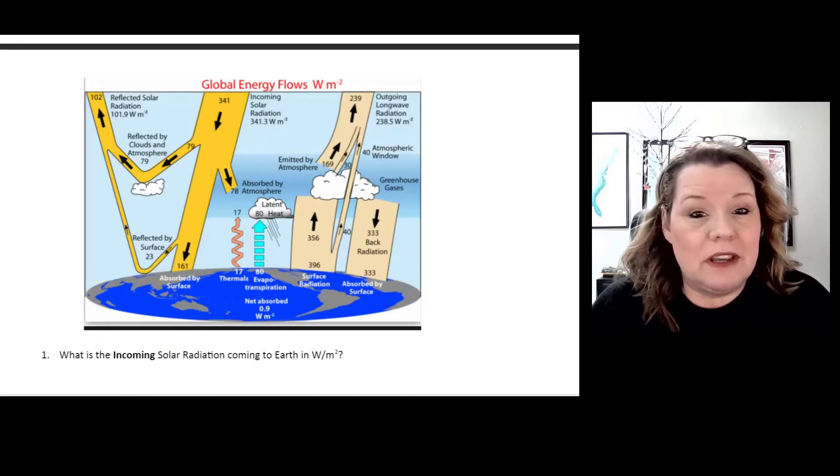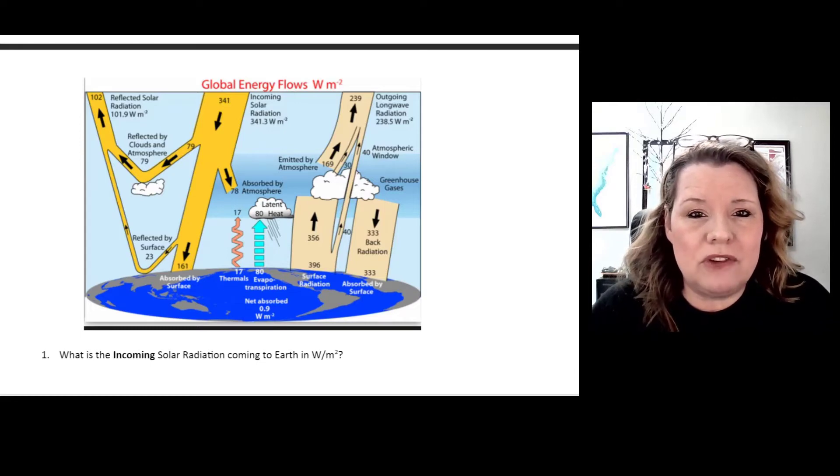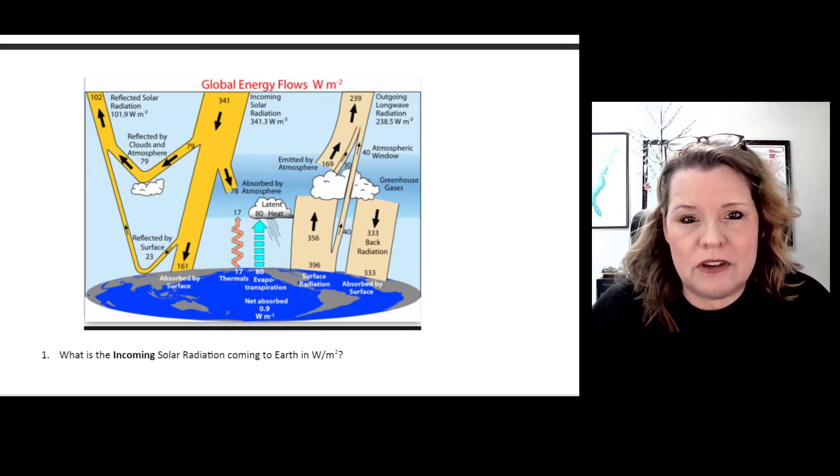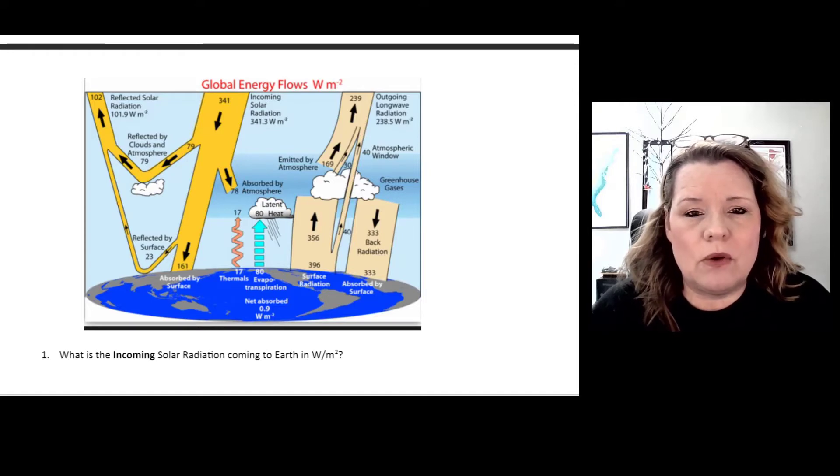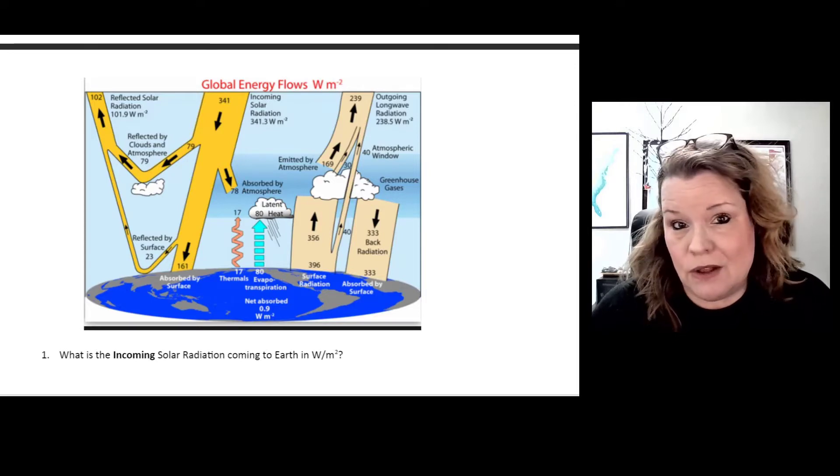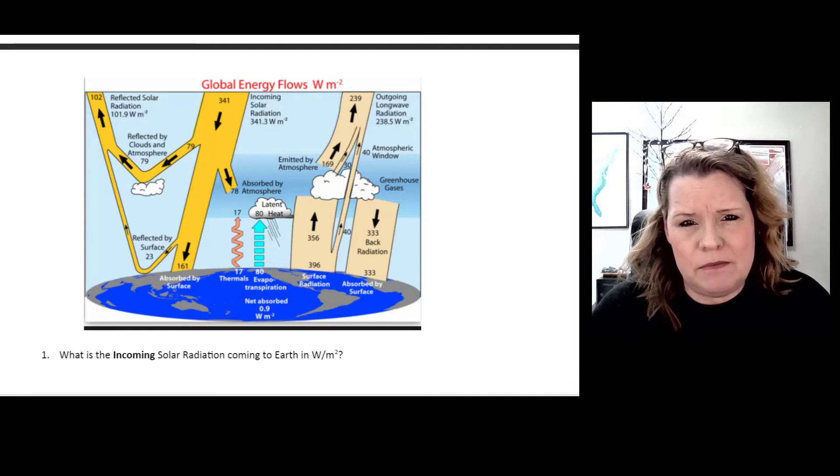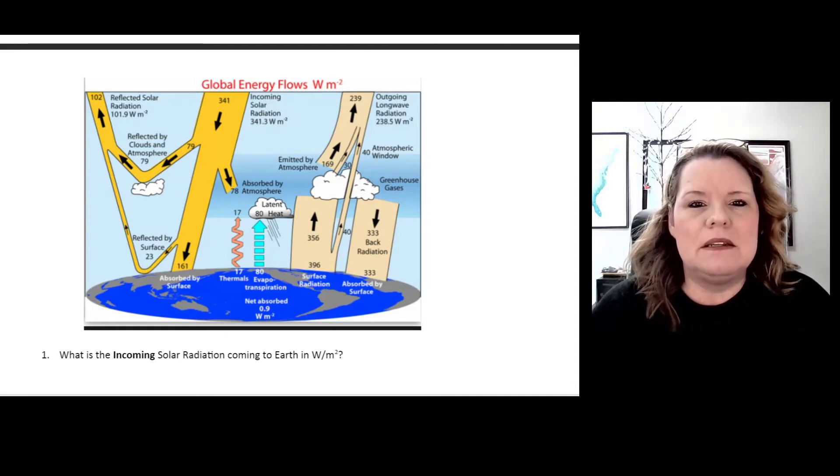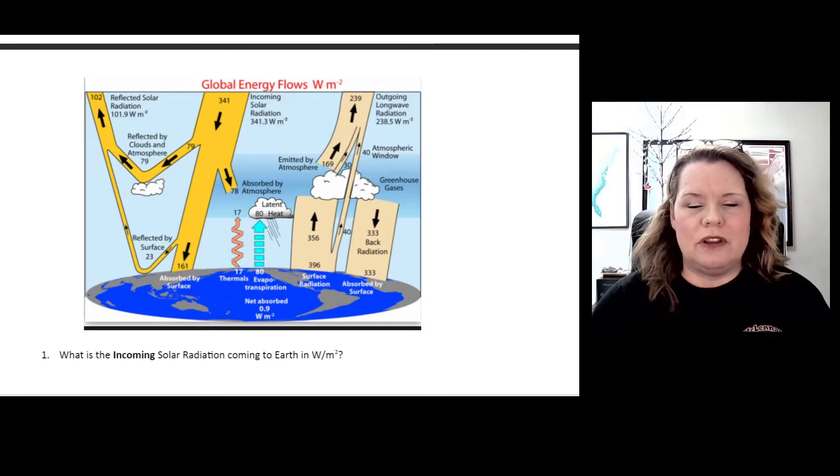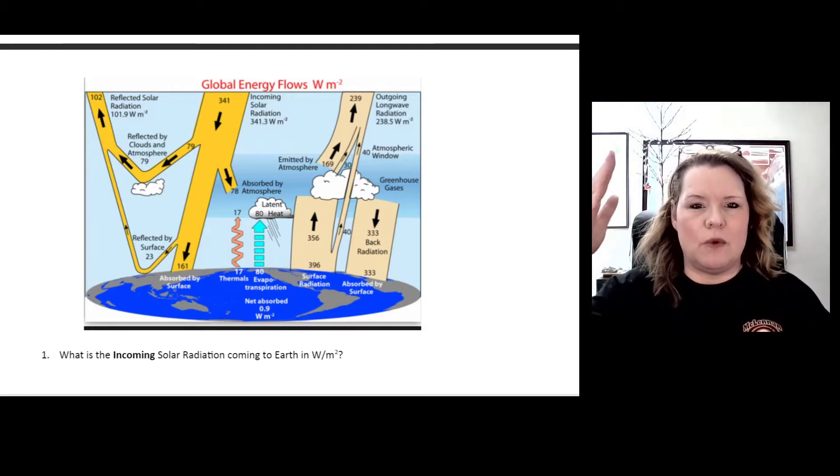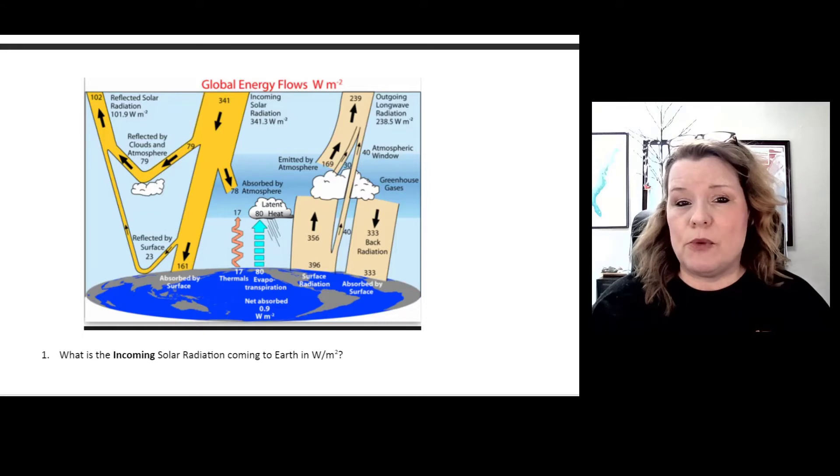This is the basic energy budget map, and it's showing how much solar energy is coming in in watts per square meter. Why that's important is that's how energy is measured. If we have a balanced climate, we should be essentially having the same amount coming in and going out, and things would stay at an equilibrium.